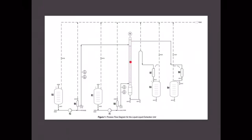Inside the column, we have a rotating stirrer. This can control the speed of the stirrer up to 1000 revolutions per minute. The chemicals used in the experiment are acetone as the solute, water as the diluent, and toluene as the solvent.